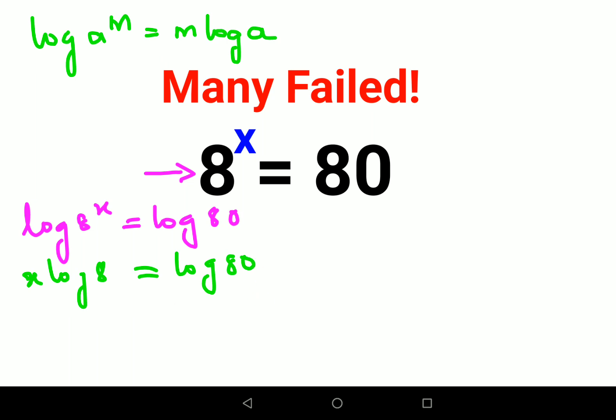So here also this will be written as X log 8 equals to log 80. Now in order to find the value of X, let's divide both sides by log 8. So answer comes out to be X equals to log 80 upon log 8, which can very well be written as log 80 to the base 8.